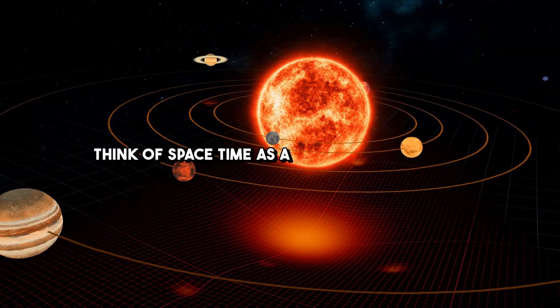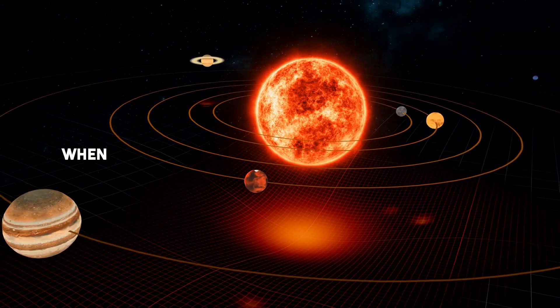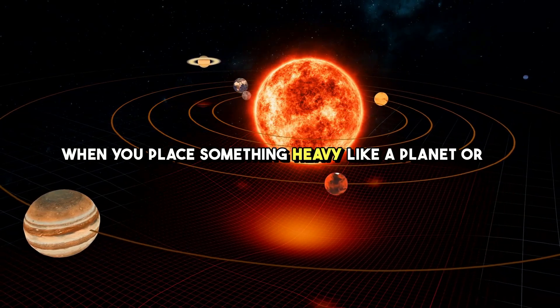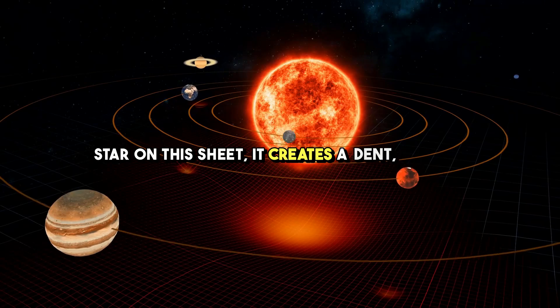Think of space-time as a giant, flexible sheet. When you place something heavy like a planet or a star on this sheet, it creates a dent, a curve.